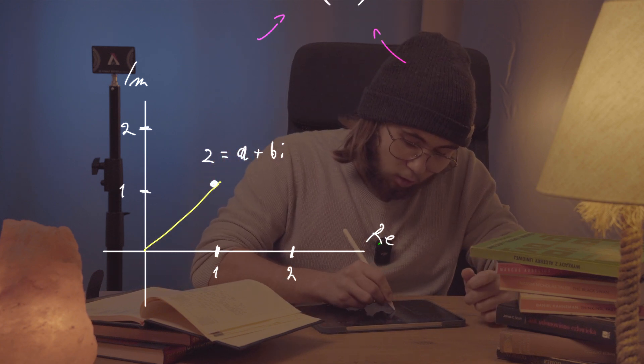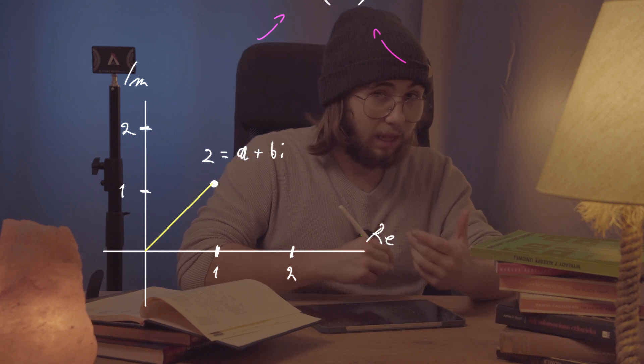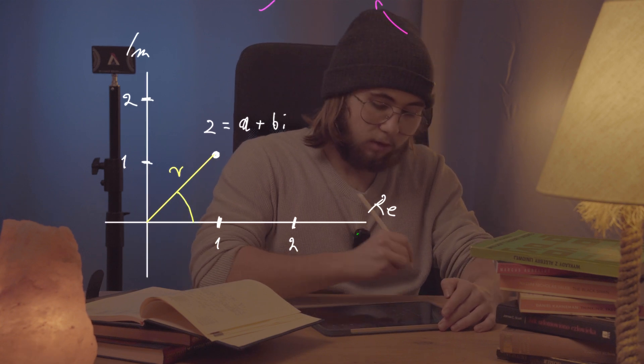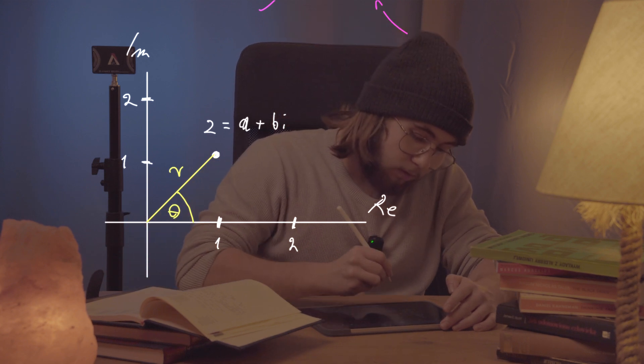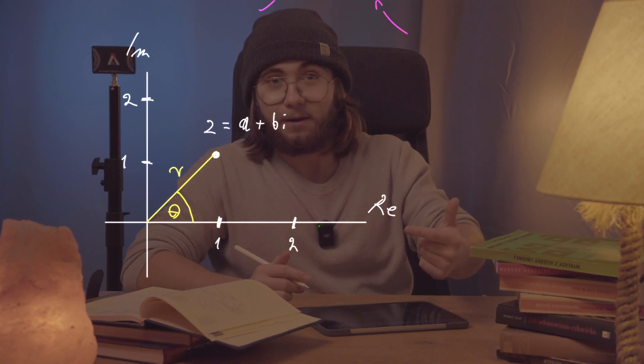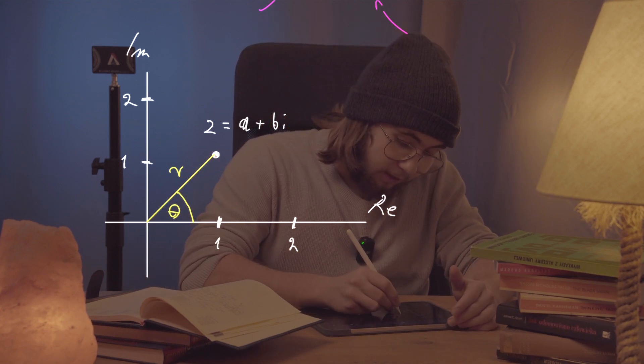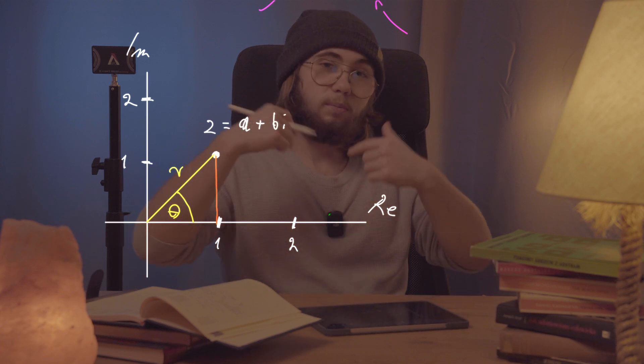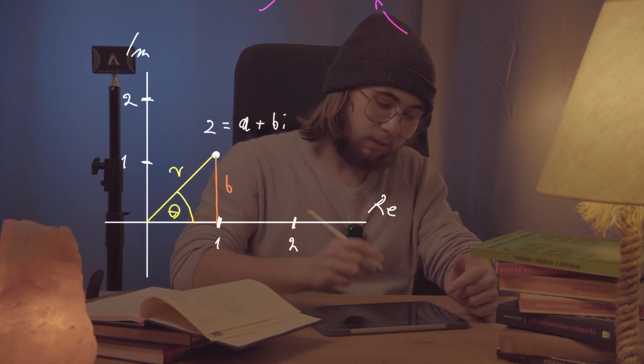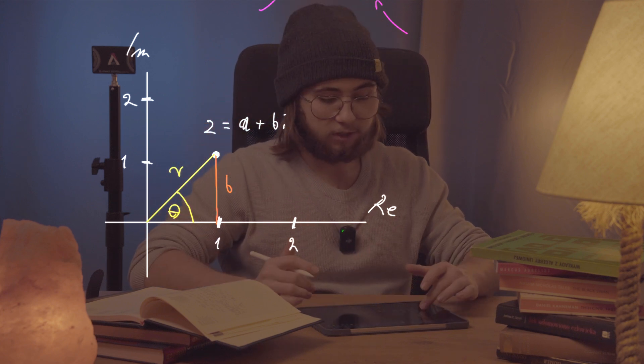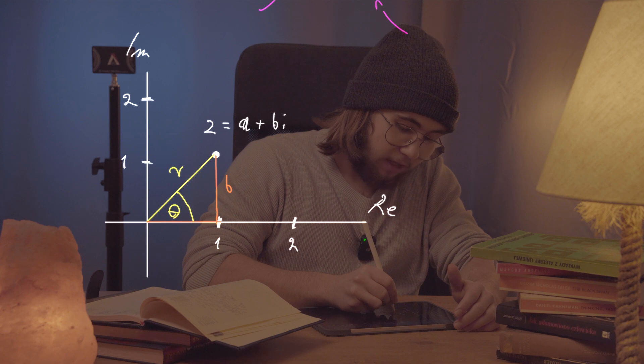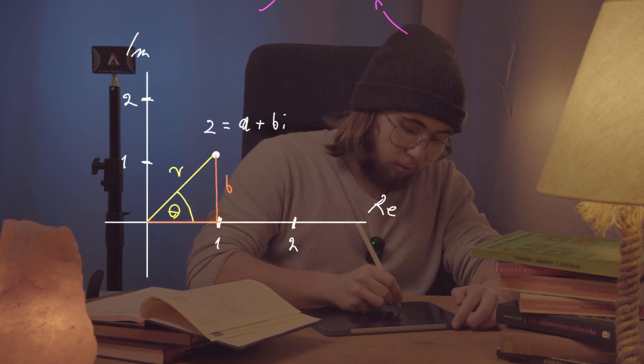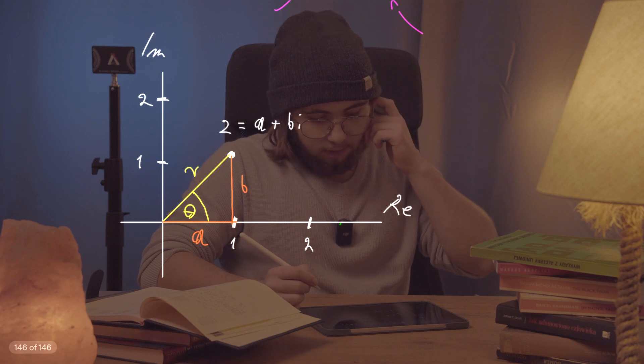And so now we can draw the line connecting the origin to our point z and call the length of that line, let's say something r. And then also we can call the angle between this line connecting the origin and the point z and the real axis by theta. And now, after noticing that this distance from the real axis to the point z is going to be equal to b. So that's how many imaginary units we are going up above the real axis. And also this length from the imaginary axis to a line going through z is going to be equal to a. So this is our real part.